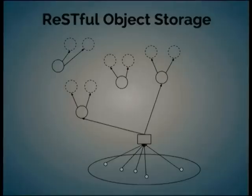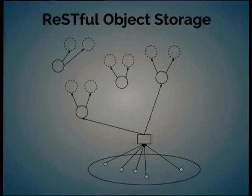Another thing we can do with Ceph is RESTful object storage — and here's where it gets very close to Swift. There is a facility called Rados Gateway which allows us to interact with objects in the store directly using RESTful APIs over HTTP and HTTPS with JSON. We can use S3 and Swift client APIs and tools to interact with this object store in a very scalable manner.